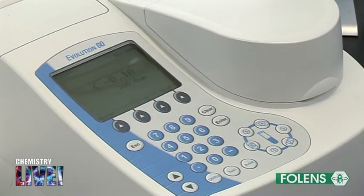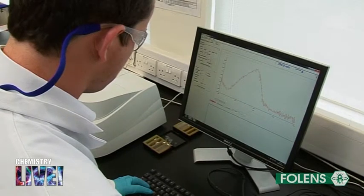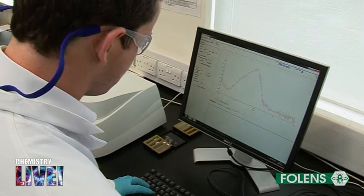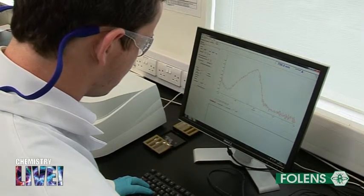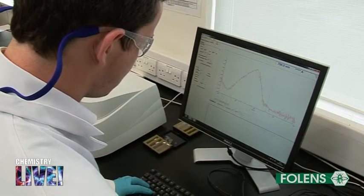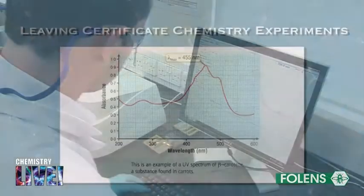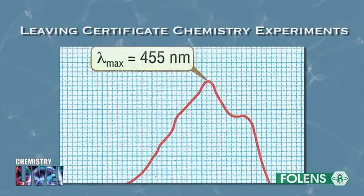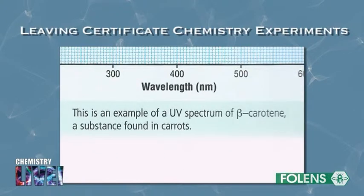This instrument measures the absorption of UV radiation by the solution over a range of wavelengths. In general, depending on the compound, maximum absorption tends to occur at a particular wavelength. This helps to identify the compound and also to measure the concentration of the compound in solution.